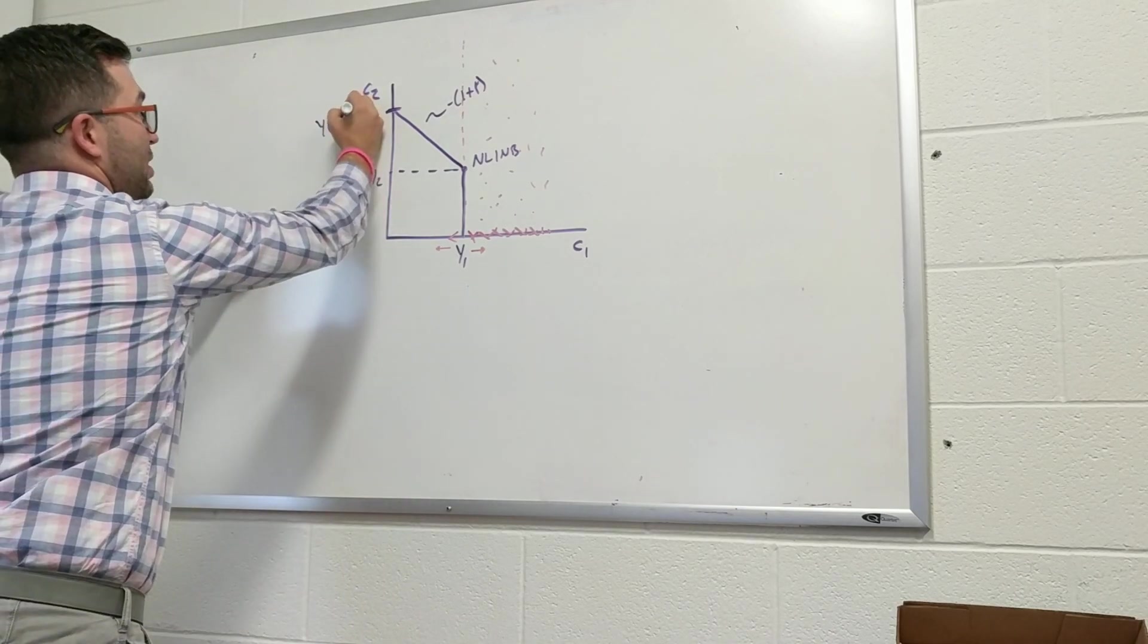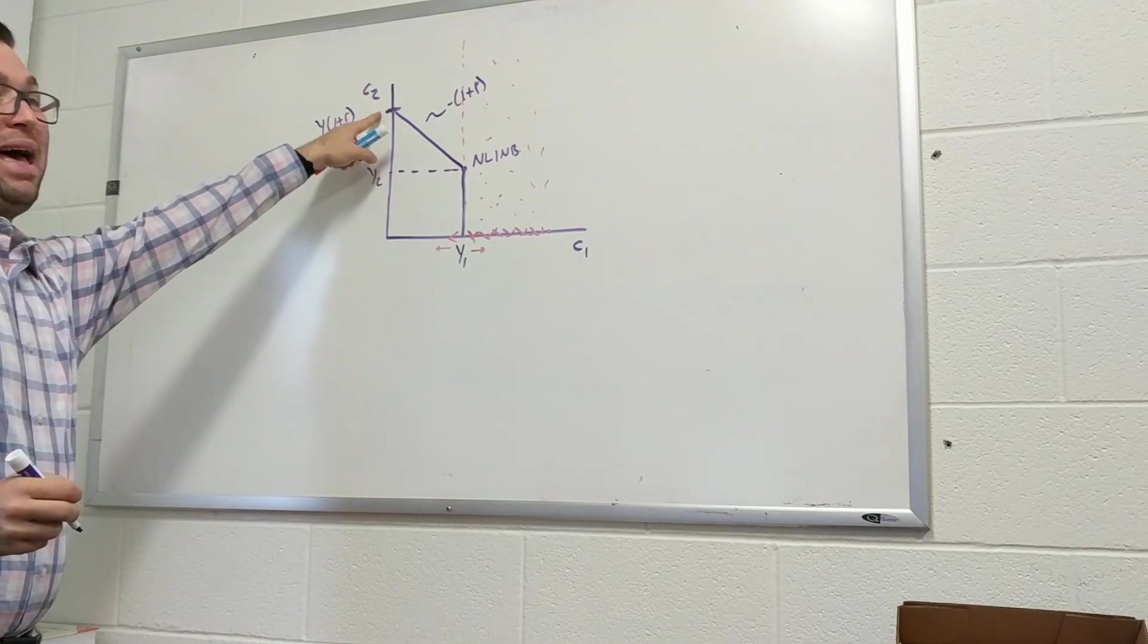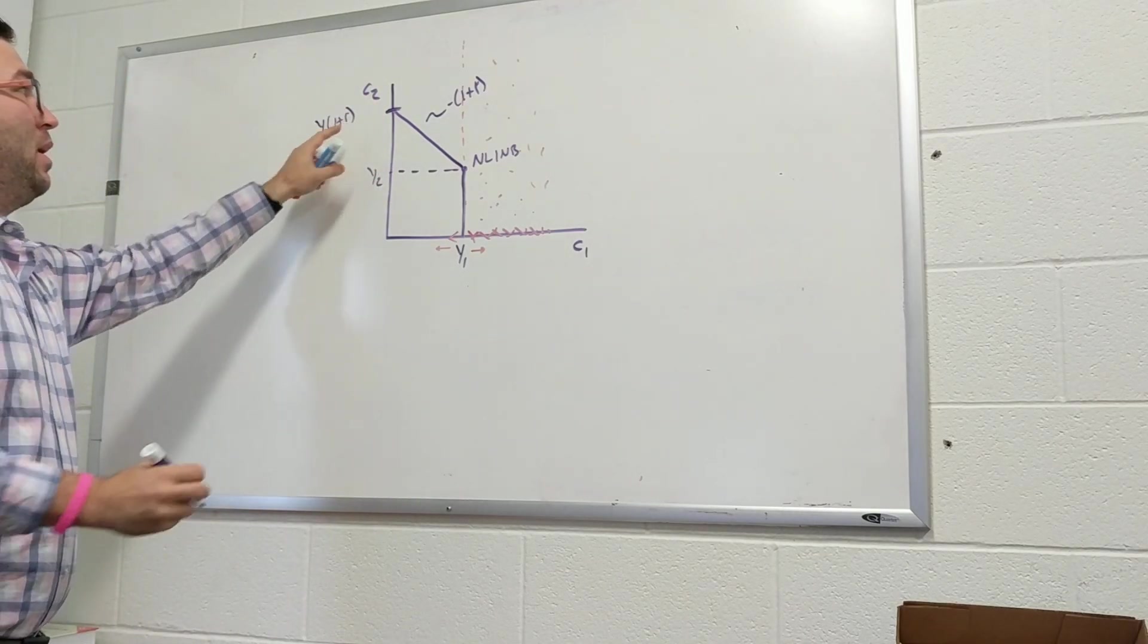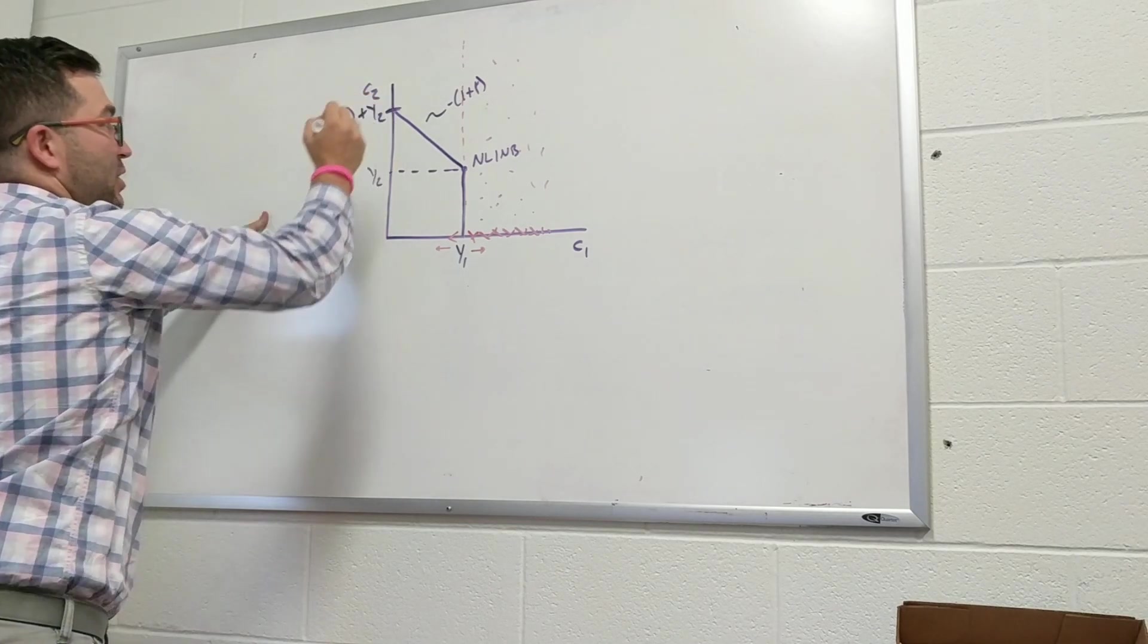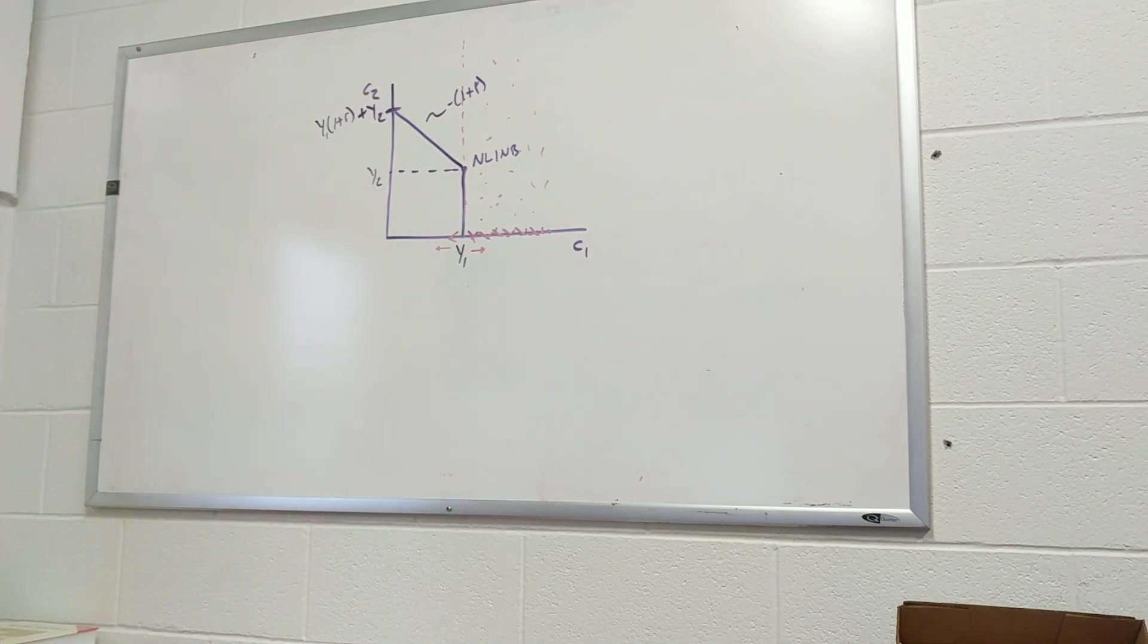times 1 plus R, because this is the maximum I can consume if I saved everything, plus Y2. Because I could also consume everything in the future. And that would be everything that's shaded in here. Those are all possible points.